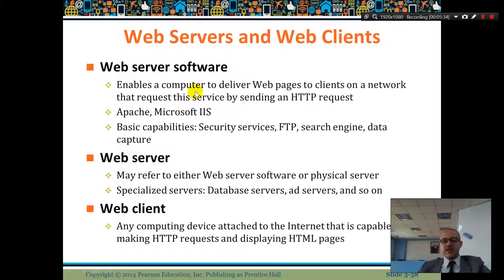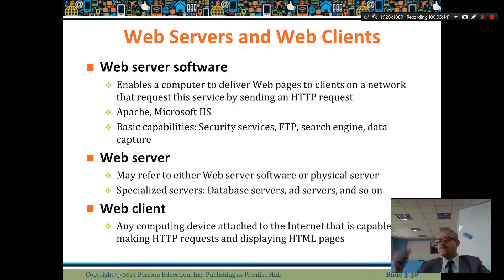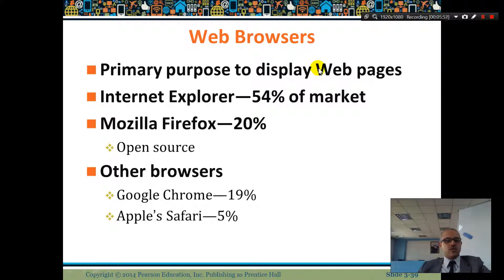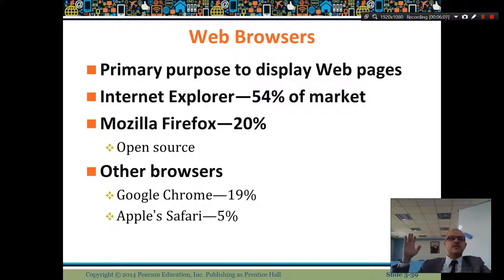Web server software is software that works on the internet — for example, Facebook is a software that works on the internet. The web server is the computer that serves others, and the web client is the person who accesses the content. Web browsers — like Internet Explorer, Mozilla Firefox, Google Chrome, and Apple Safari — have the main function of displaying web pages.